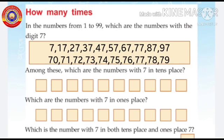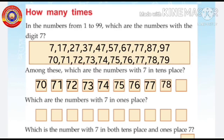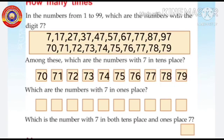Among these, which are the numbers with 7 in tens place? Yes, 70, 71, 72, 73, 74, 75, 76, 77, 78, and 79. Second question: which are the numbers with seven in ones place? Yes, 7, 17, 27, 37, 47,